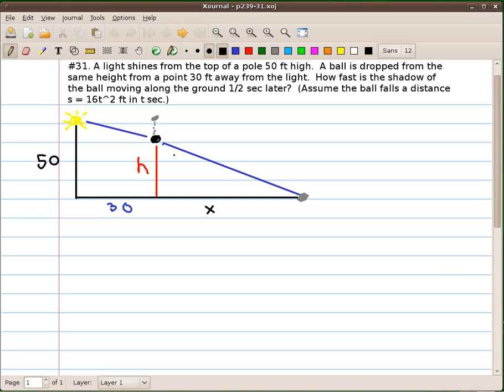The height of the ball is changing and represented by the variable h. The distance from where the ball is dropped to the shadow is also changing, and I've indicated that as a distance of x. 30 feet is a fixed distance away from the light that the ball was dropped, and 50 feet is the fixed distance of the height of the pole.